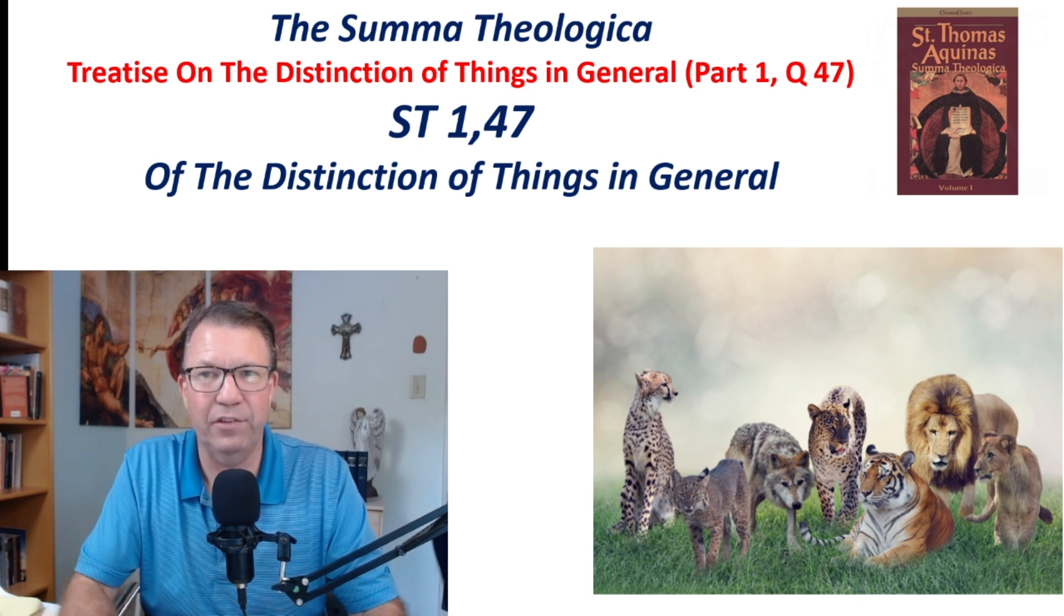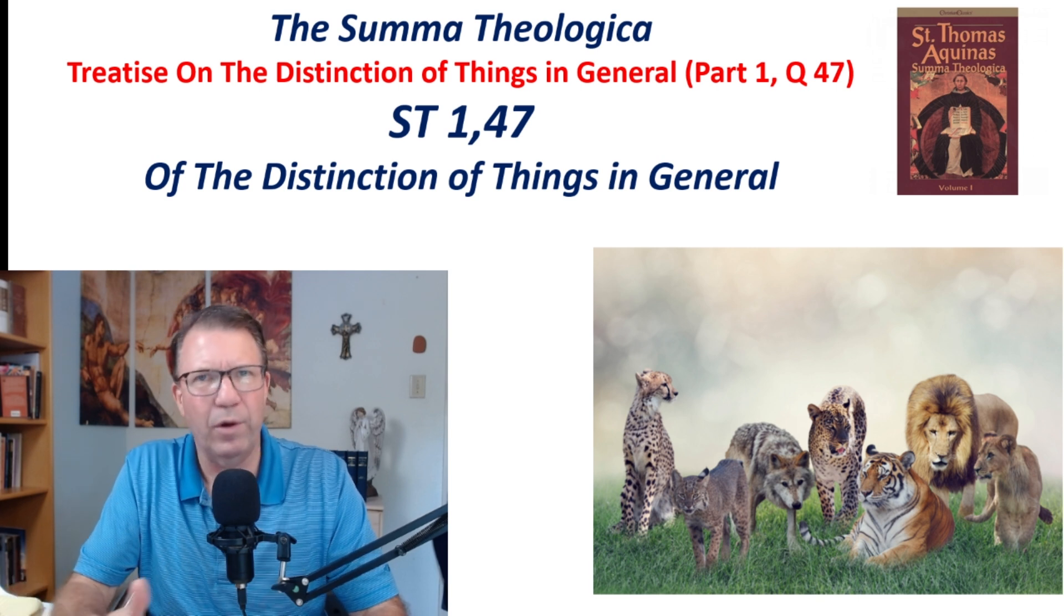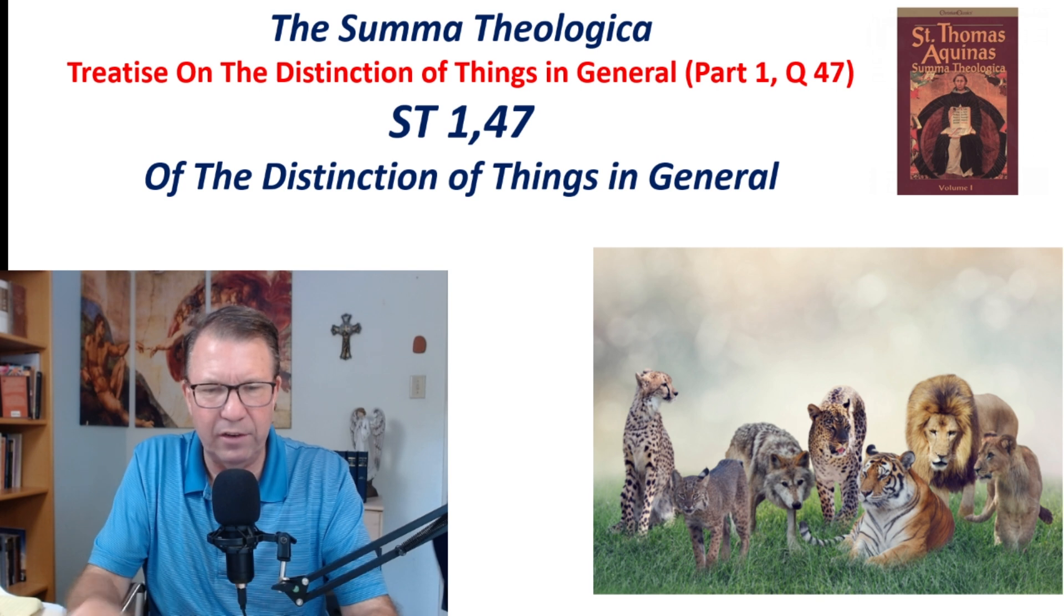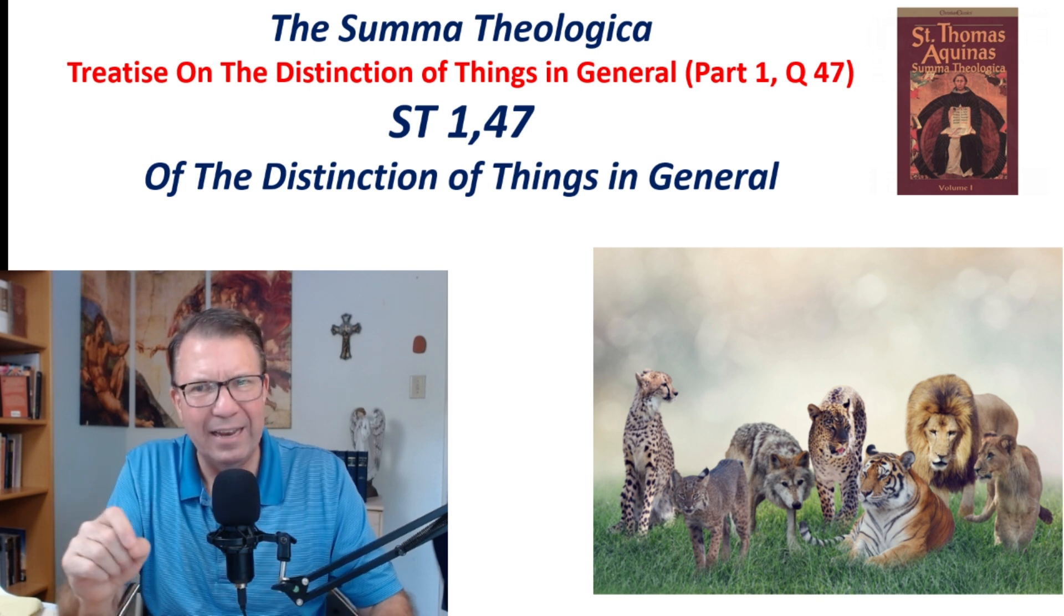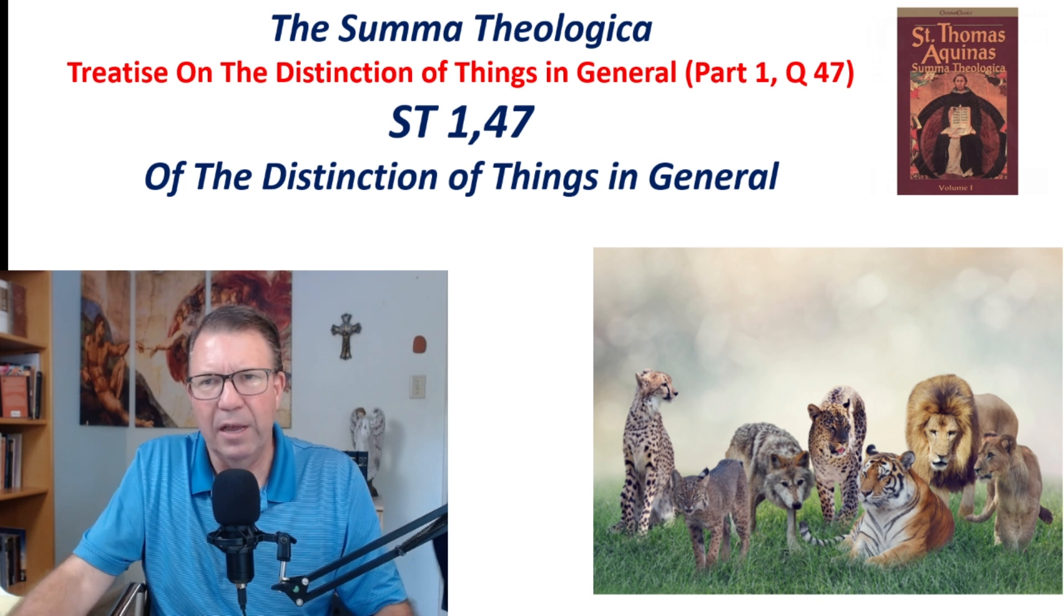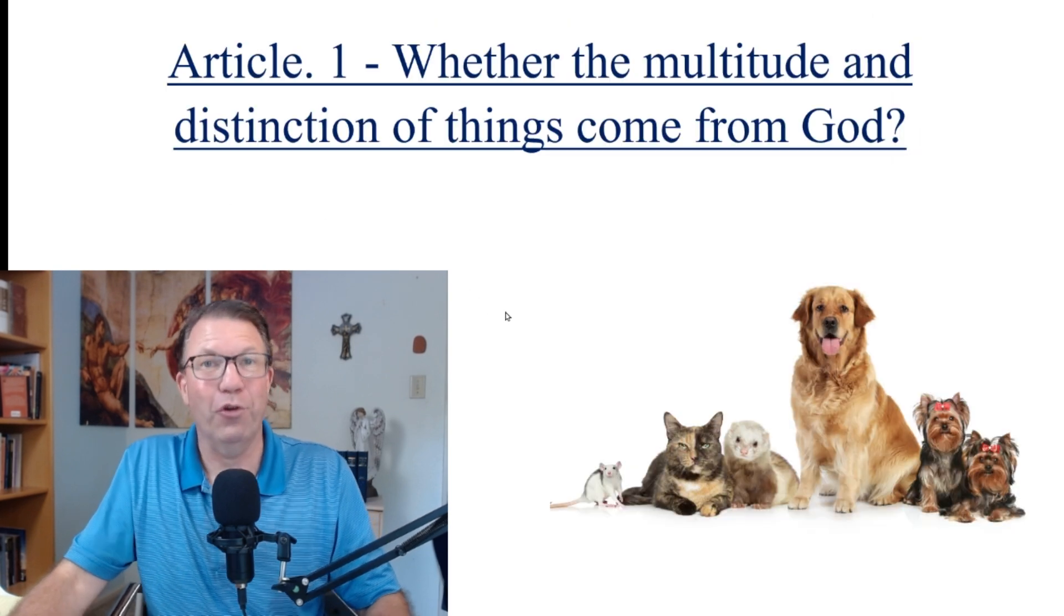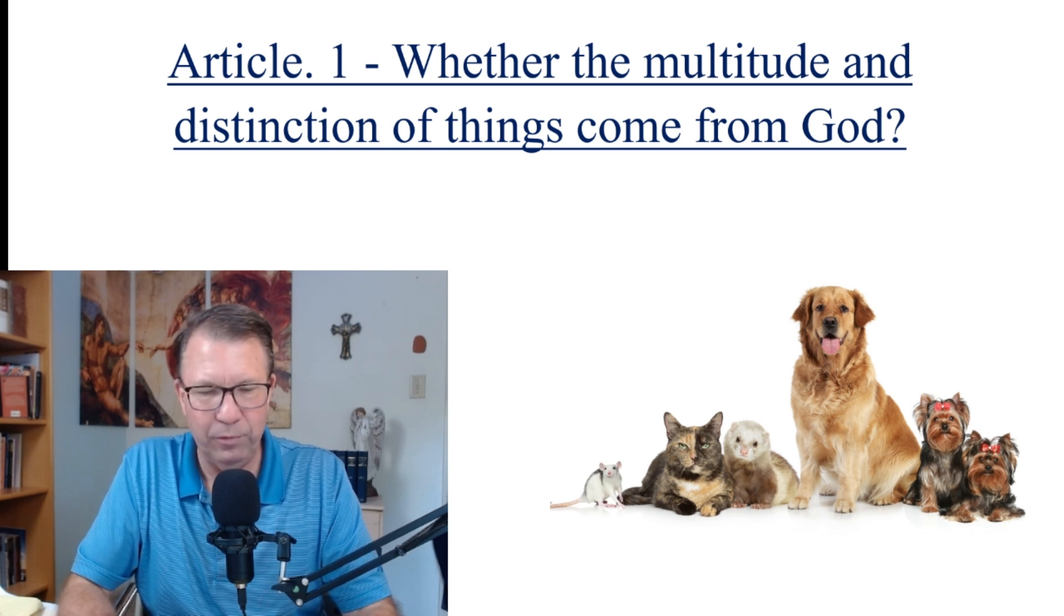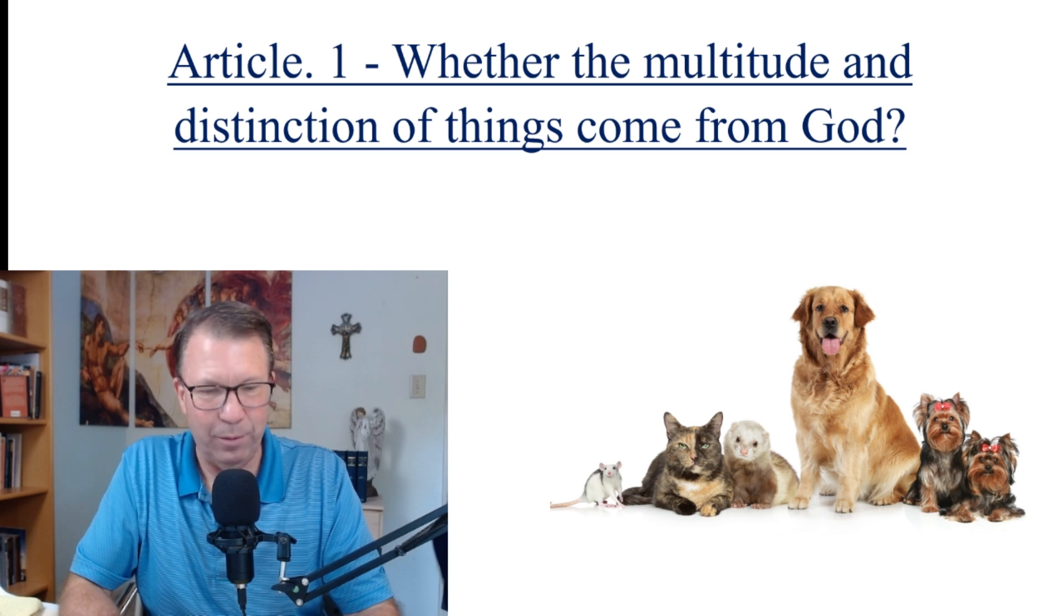This is called the Treatise on the Distinction of Things in General. Why are there differences? Why is there inequality? And he's also going to get into the question at the very end, is there only one world? And it's all related to this distinction of things, and so we are going to begin, as you might expect, with Article 1 of this, whether the multitude and distinction of things comes from God.